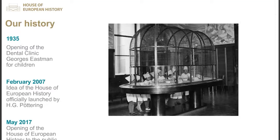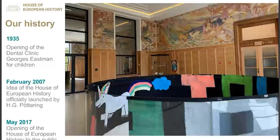What is the House of European History? Our history started in a dental clinic for poor children in Brussels in 1935 — this is the building where today the House of European History is located. You can see all those children waiting for dental treatment in front of very large bird cages, listening to the birds singing to calm them down before treatment. This is how the building looks today, with the same waiting room and the same paintings from the Fables of La Fontaine, before the House of European History opened to the public in 2017.